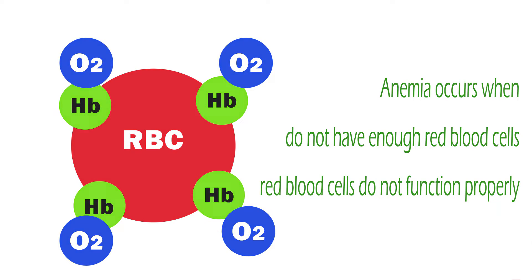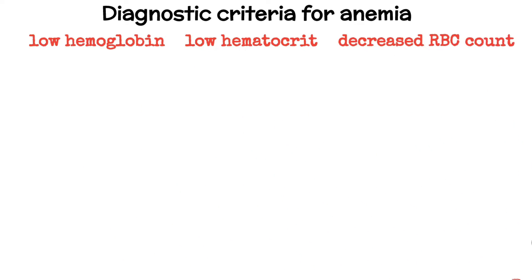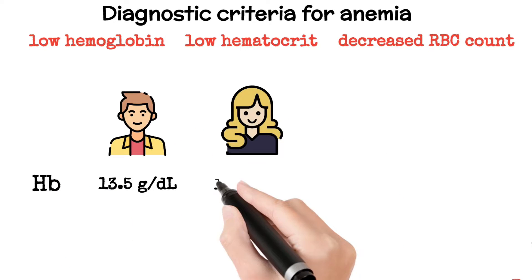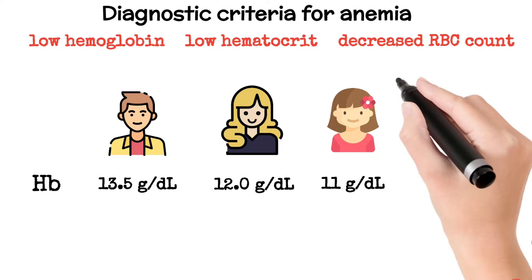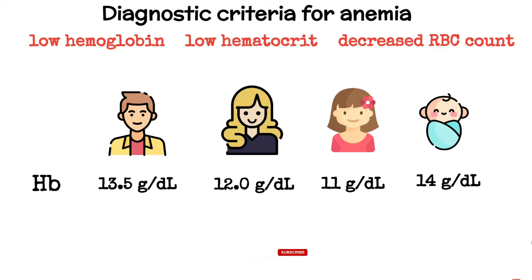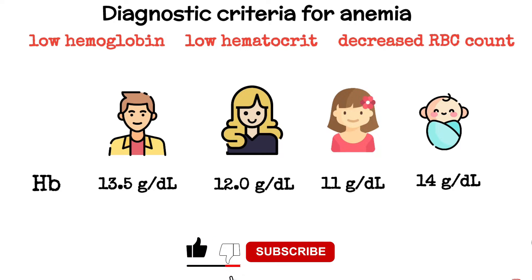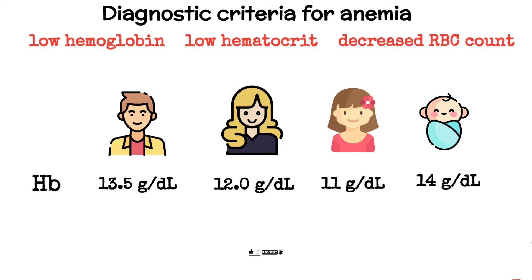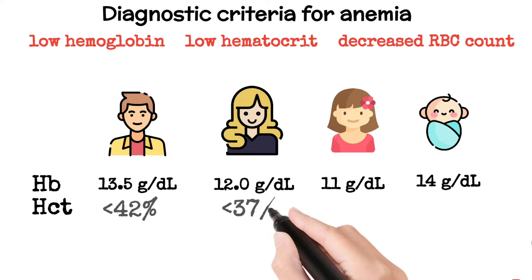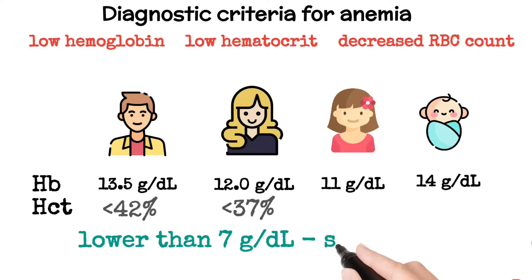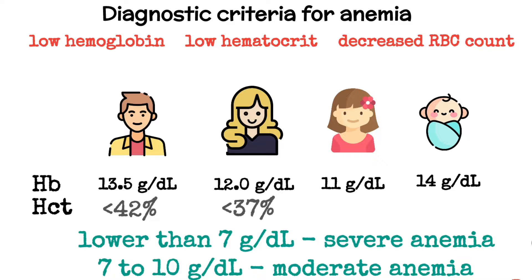Anemia occurs when you do not have enough red blood cells or when your red blood cells do not function properly. The diagnostic criteria for anemia are low hemoglobin, low hematocrit, or decreased RBC count. It is diagnosed when a blood test shows a hemoglobin value of fewer than 13.5 grams per deciliter in a man, or less than 12 grams per deciliter in a woman. Normal values for children vary with age. From two years to puberty it is 11 grams per deciliter; for a newborn, 14 grams per deciliter is the lower limit due to high hemoglobin. Hematocrit values less than 42% in males and 37% in females are considered anemic. A hemoglobin level lower than 7 grams per deciliter is severe anemia, while 7 to 10 grams per deciliter is moderate anemia.